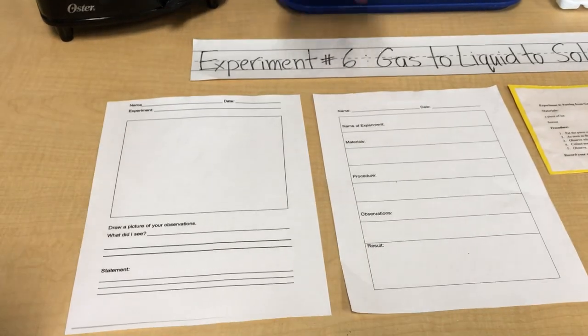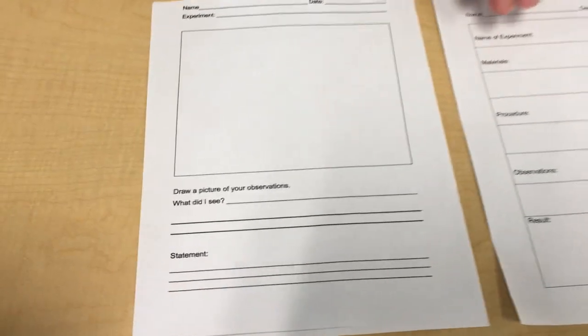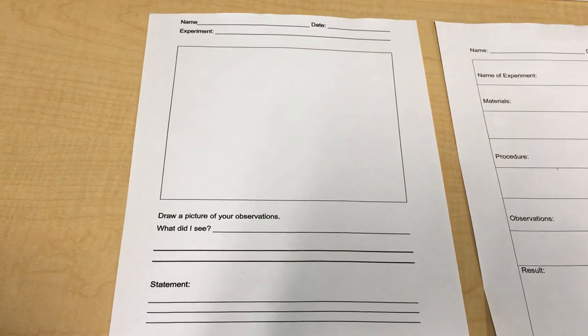So you received your experiment forms. The way you work them out is the first level, this form, you draw a picture of what you saw. Draw a picture of the hot plate, the ice cube melting, the steam rising, all of that.